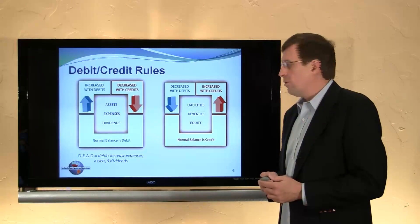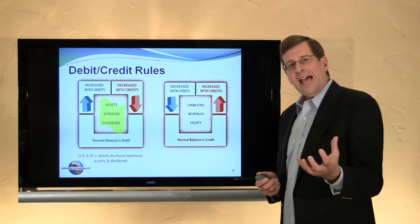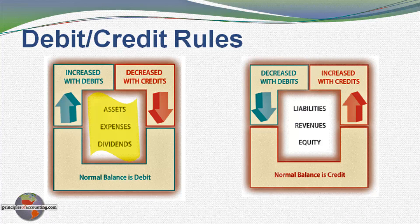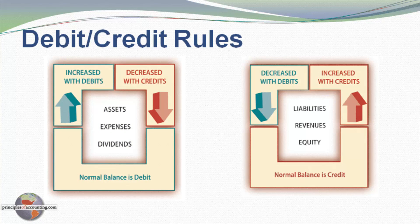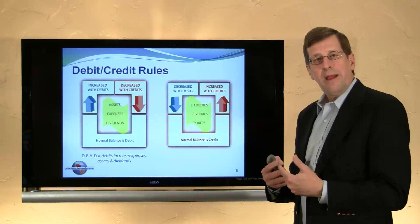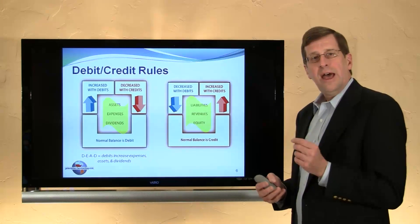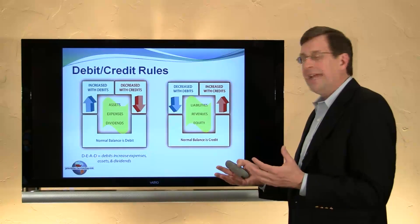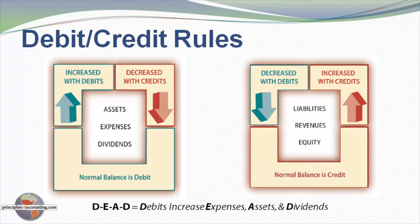Let's look closer at debit-credit rules. The accounts — assets, expenses, and dividends — have something in common: they carry a debit balance normally, debits increase those accounts, and credits decrease those accounts. It's the opposite effect for liabilities, revenues, and equity accounts: they carry a credit balance, they're increased with credits, and decreased with debits. To help you remember this — and it is important that you memorize this — think about the acronym DEAD. Debits have a similar effect on Expenses, Assets, and Dividends: these accounts are increased with debits and decreased with credits.